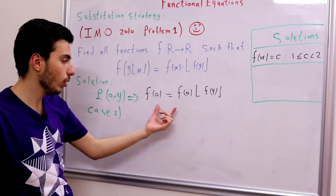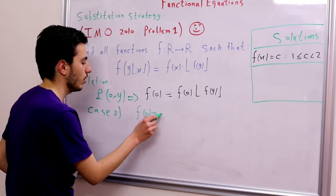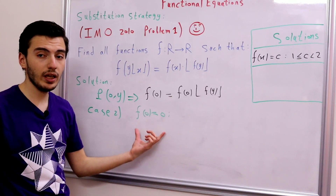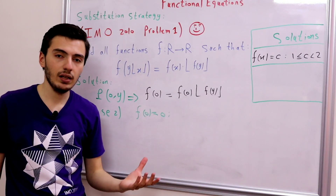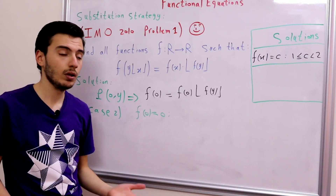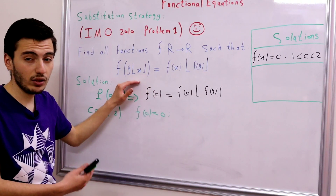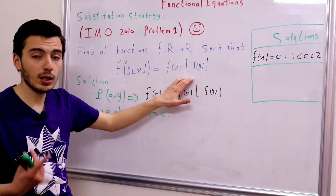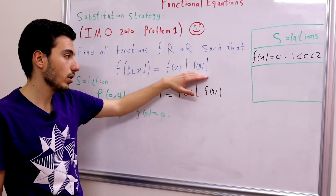Case 2 is f(0) = 0. To use this, take any α with 0 ≤ α < 1, so ⌊α⌋ = 0. Substituting x = α, the left-hand side becomes f(0) = 0, so the right-hand side is also 0. This gives two sub-cases: either f(α) = 0, or ⌊f(y)⌋ = 0.